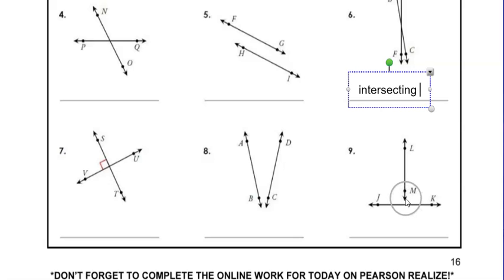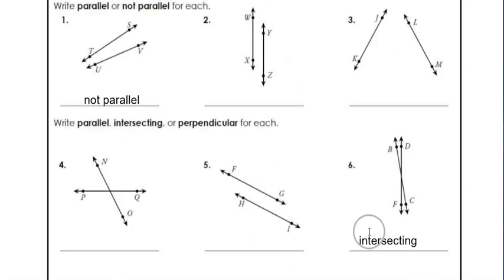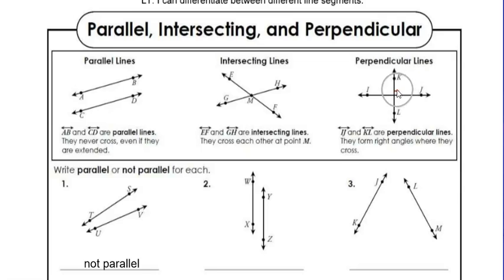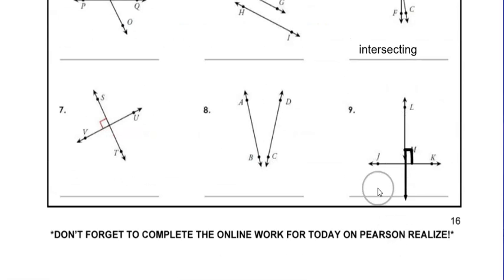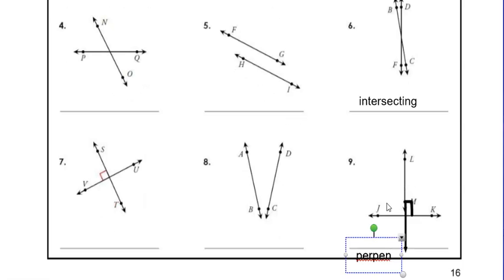They can't be parallel because you can't drive a train on these tracks, and they don't make that perfect T shape. Now looking at number nine — this arrow tells me the line continues. If we extend this line straight down, does it make a perfect T? Can I draw that perfect little box in the corner to show a 90-degree right angle? If yes, that means these lines are perpendicular. So number nine is perpendicular — P-E-R-P-E-N-D-I-C-U-L-A-R. These are perpendicular lines.